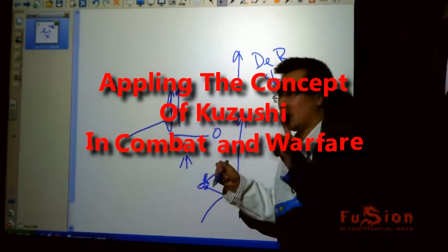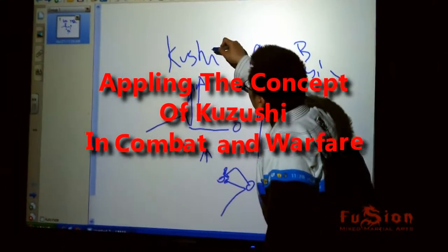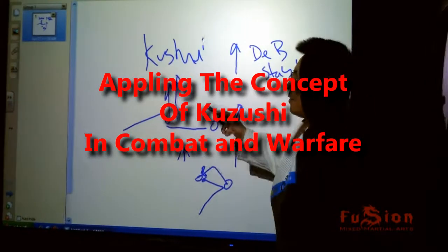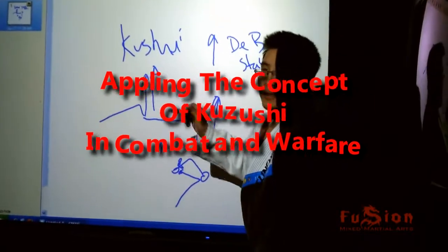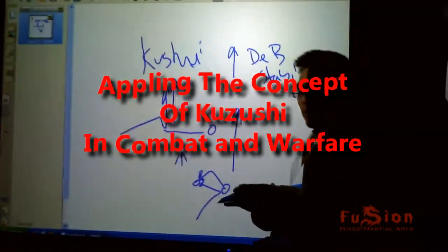So in judo, what's that concept called? Kuzushi. Alright? It means off balance. Okay? So you have to off balance them on a physical level.